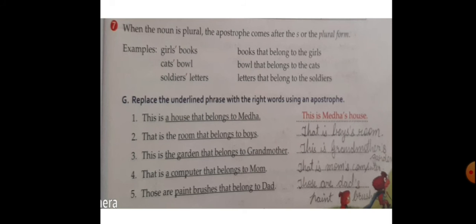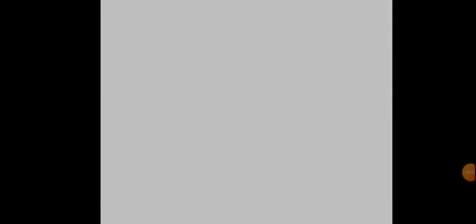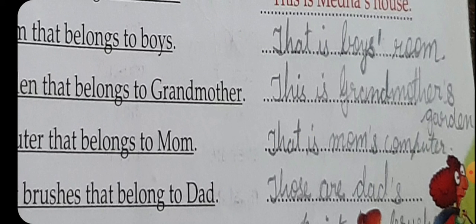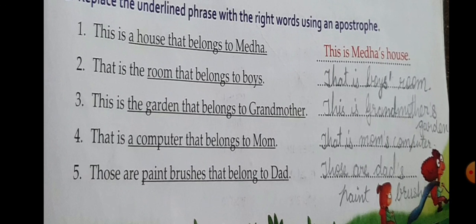Exercise G: Replace the underlined phrase with the right words using an apostrophe. This is a house that belongs to Mecca → This is Mecca's house. That is a room that belongs to boys → That is boys' room. जो plural noun होगा, उसमें apostrophe करके s के बाद आएगा — boys पूरा लिखना है, फिर बाजू में सिर्फ apostrophe का sign। This is the garden that belongs to grandmother → This is grandmother's garden. Four and five, do it by yourself.